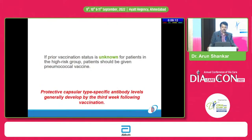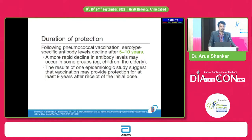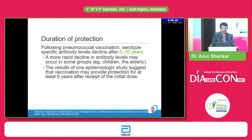If the vaccination status of your patient is unknown, you can administer a single dose of pneumococcal polysaccharide vaccine in high-risk patients. After vaccination, protective capsular type-specific antibody levels generally develop by the third week. Serotype-specific antibody levels decline after 5 to 10 years, and in children and the elderly, a more rapid decline in antibody levels may occur.